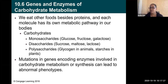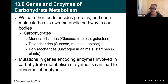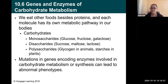We eat other foods besides proteins, and each molecule has its own metabolic pathway in our bodies. Carbohydrates are another big one. They can be monosaccharides — single sugars like glucose, fructose, and galactose — or disaccharides, where two single sugars are put together, like sucrose (table sugar), maltose (the sugar in beer), and lactose (the sugar in milk). Polysaccharides include potatoes, glycogen in animals, and starches in plants. Mutations in genes coding for enzymes involved in carbohydrate metabolism or synthesis can lead to abnormal phenotypes, just like mutations in the protein pathway.